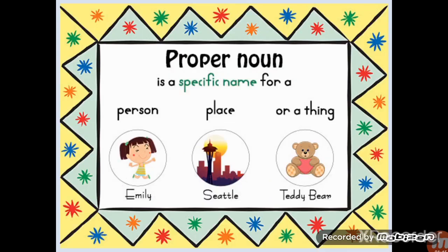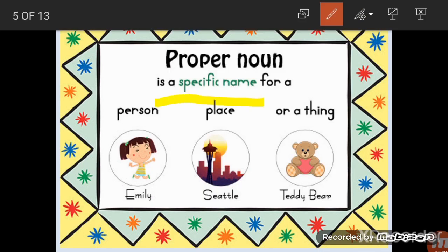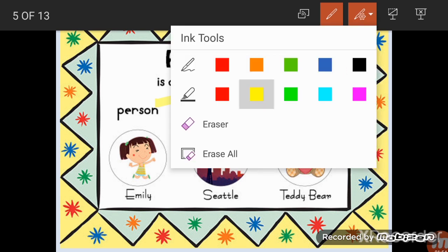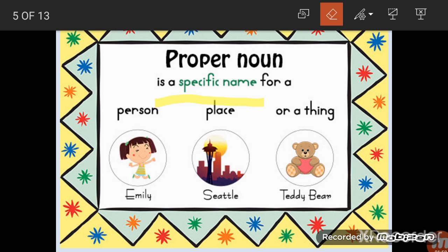Now let's move to proper noun. A proper noun is a specific name of a person, place, or thing. For example, there are many girls around the world, but 'Emily' is a specific name for a person — that makes it a proper noun. From our class, we can say Zainab is a girl — 'Zainab' is the proper noun and 'girl' is the common noun. Similarly, Maafro, Maryam, and Ishaal are all proper nouns because they are specific names.